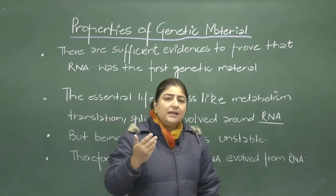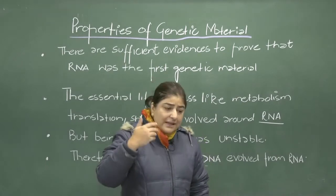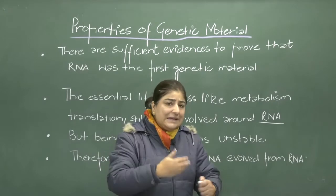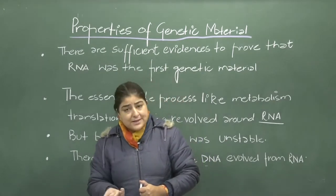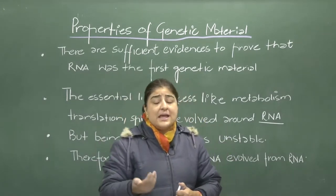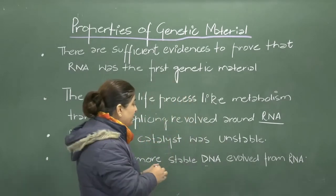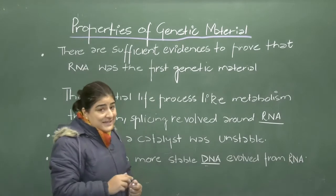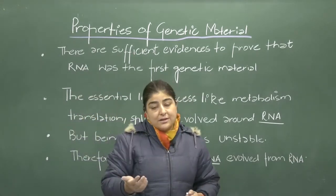In the earlier forms of life, an enzyme was synthesized when the need arose, known as reverse transcriptase. With the help of this reverse transcriptase, RNA was converted into a more stable form known as DNA. This process is known as reverse transcription. Now let's see what properties a hereditary molecule should possess for being a hereditary unit.